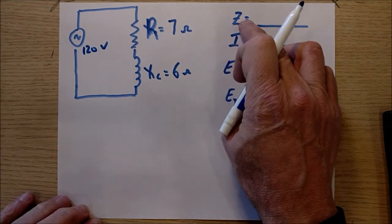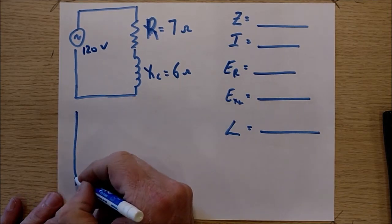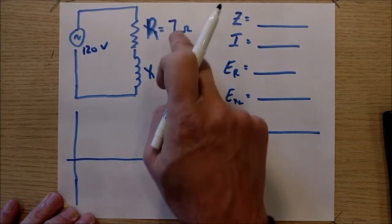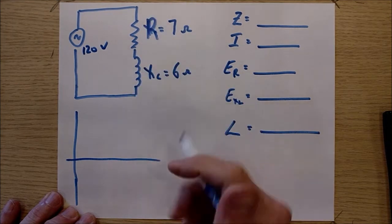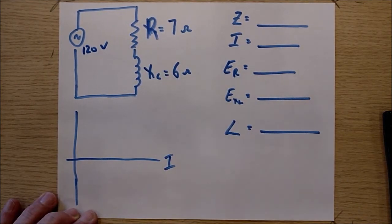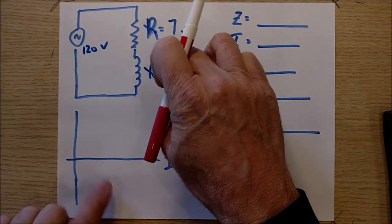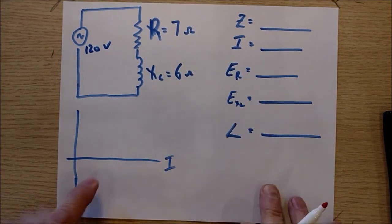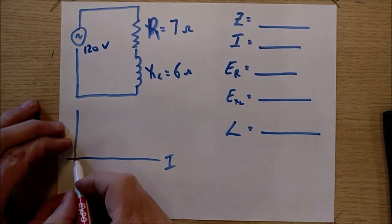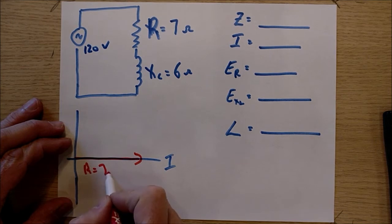The first thing I'm going to do is calculate Z. Z is going to be the phasor sum of these two. I'm going to do it right over here. My resistor, by the way, we're always going to be comparing these to the current. My resistor is always going to be on the horizontal line. The resistor always causes the current to be in phase. And so my resistor 7 ohms is going to sit right here. R equals 7 ohms.